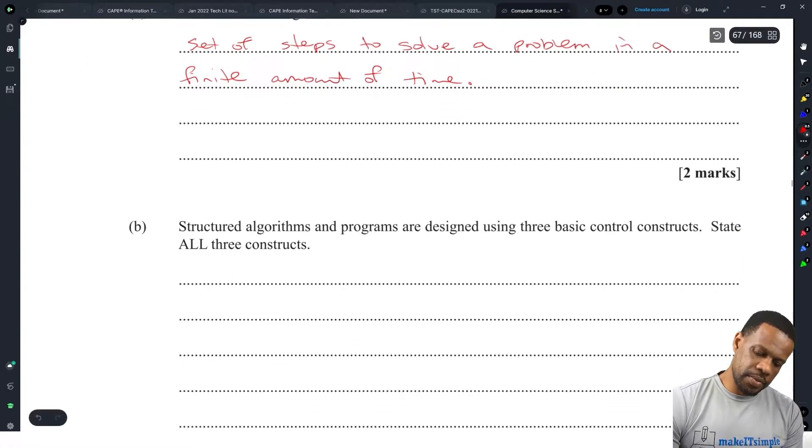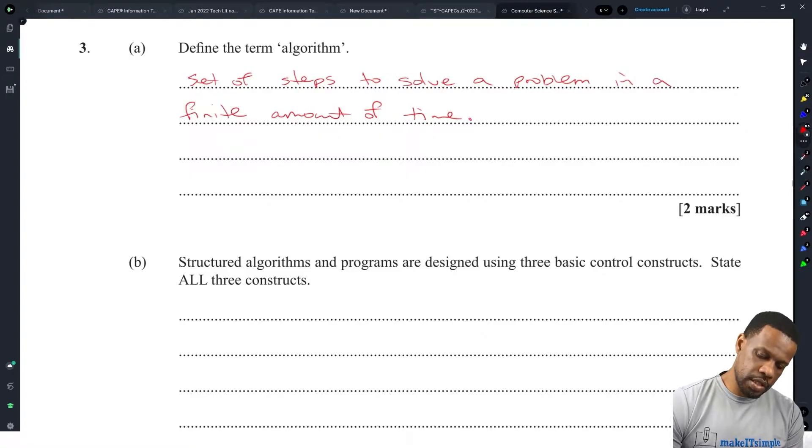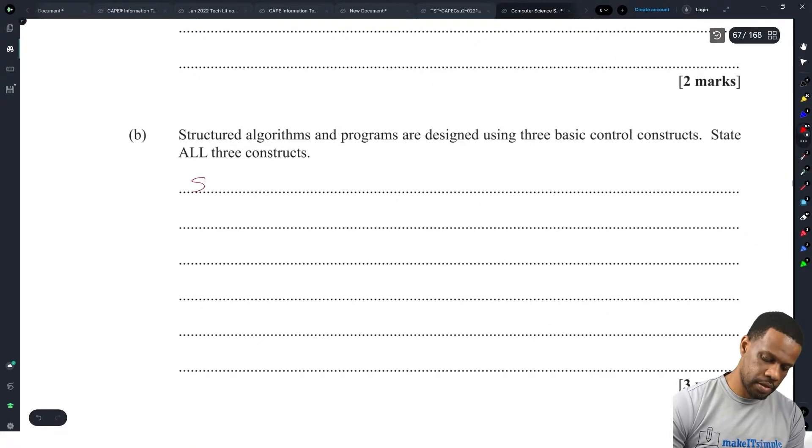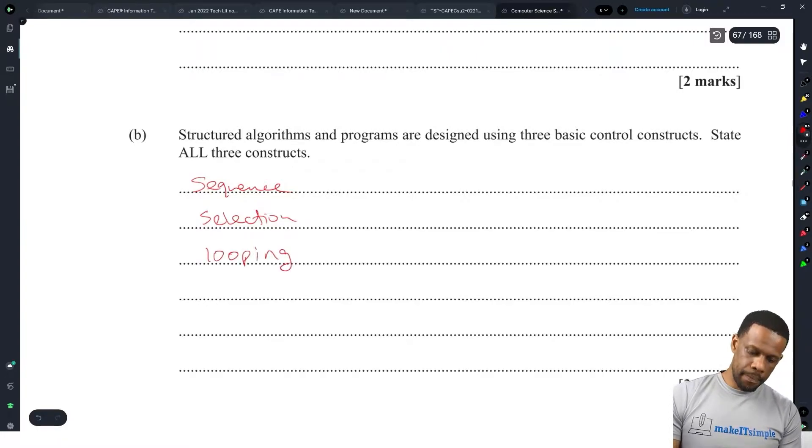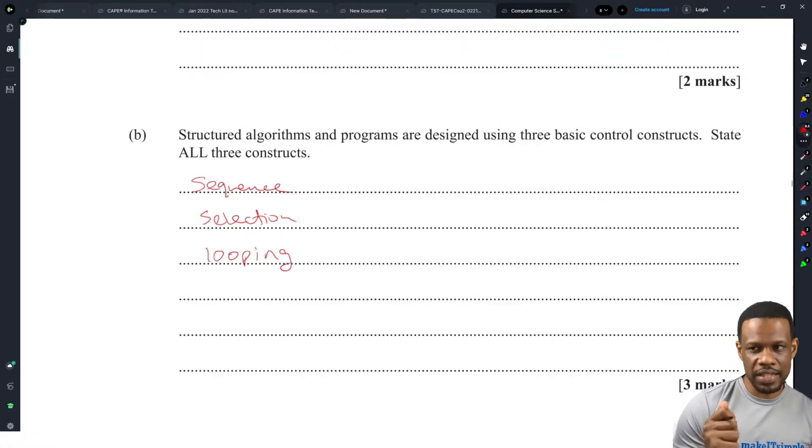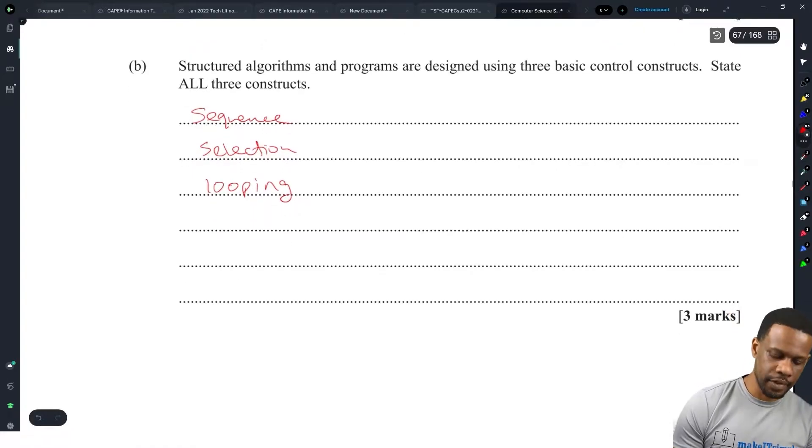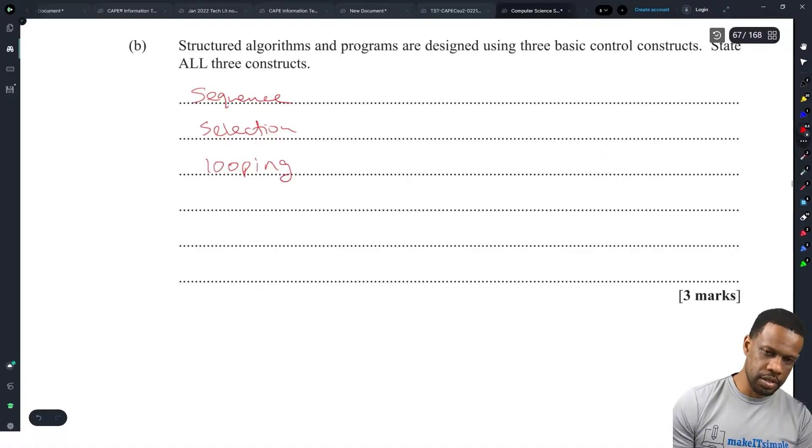Next, structured algorithms and programs are designed using three basic control structures. State all three. Alright, sequence, selection, and looping. When they say state and have all these lines, I get concerned but usually that's a problem for IT. Computer science, I don't know why they give you so much lines for it. Especially when the answer just has like point form but we'll take it.